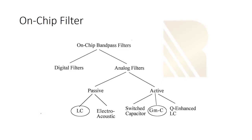On-chip filters are divided into different categories: digital filters and analog filters. Inside analog filters, we have passive and active filters. In active filters, GMC filters and switch capacitor filters are popular. Switch capacitor filters have a key feature of low power, so if we want a low-power design, we should use them — but they are more complicated than GMC filters. GMC filters are feasible, easier to design, and less complex, while switch capacitor filters are harder to design and more challenging. For passive on-chip filters, we can use LC, which can be either on-chip or off-chip.